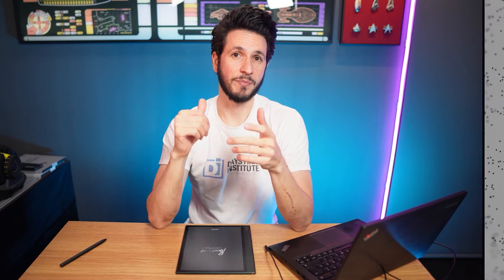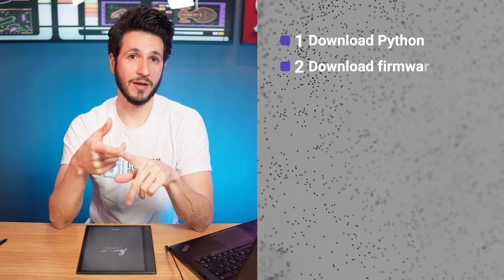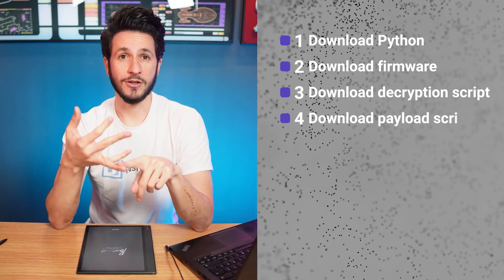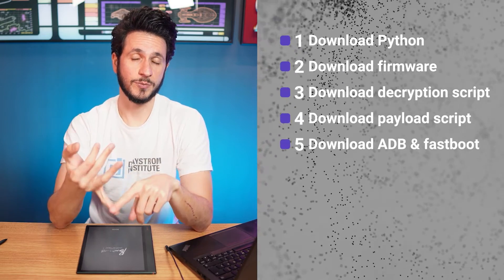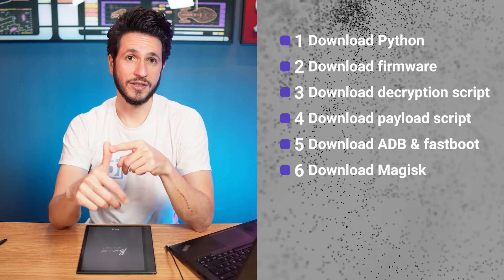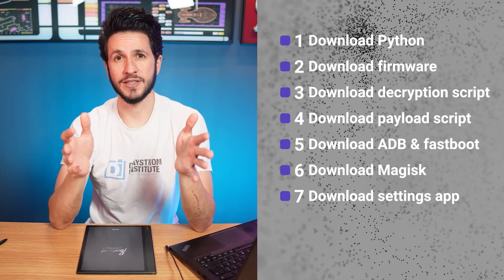Before patching the device, make sure the battery of the Node Air 2 Plus is fully charged. Then download the needed files: Python for Windows, the actual update, the decrypt Boox update script, the payload dumper script, ADB and Fastboot, Magisk for Android, and the hidden Android settings opener. You can find all of the links in the description below, and I have also prepared a package with all the needed tools. A big thanks to everyone who creates and maintains these tools and makes root access possible.